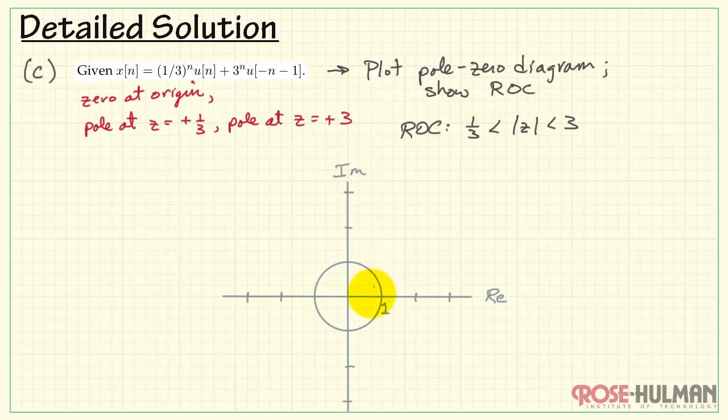Here's my complex plane, and I'm also indicating the unit circle. Let's get the axes calibrated here, and here's my zero at the origin. I have a pole at z equals one-third. It's right here. And a pole at z equals three, which would be located right there.